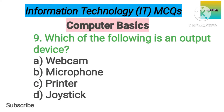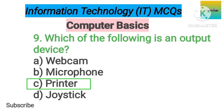Number 9. Which of the following is an output device? Option A: Webcam. B: Microphone. C: Printer. D: Joystick. The correct answer is option C, Printer.